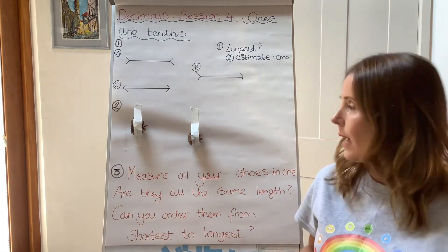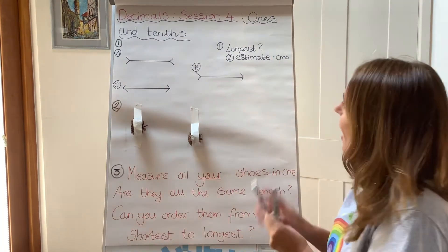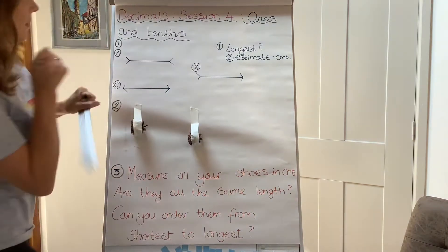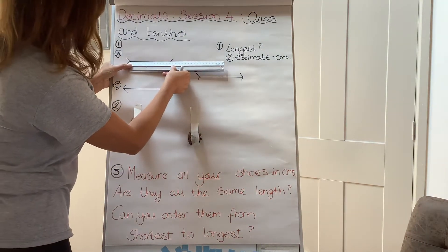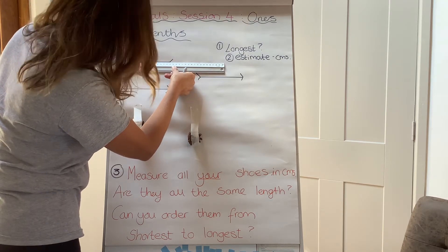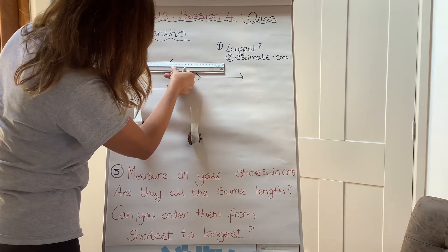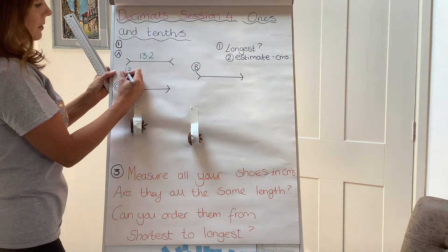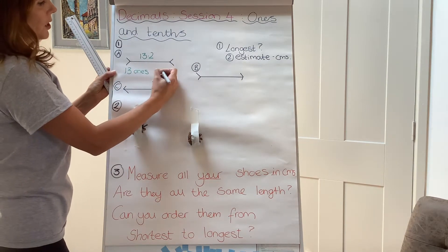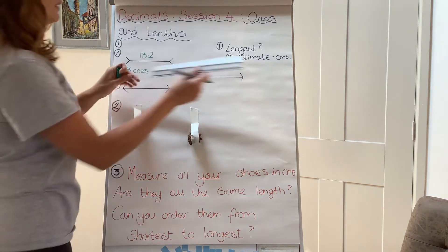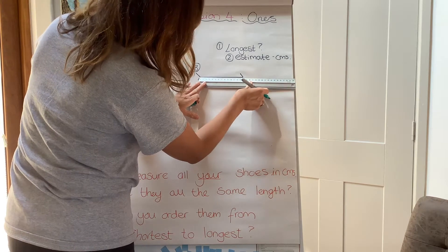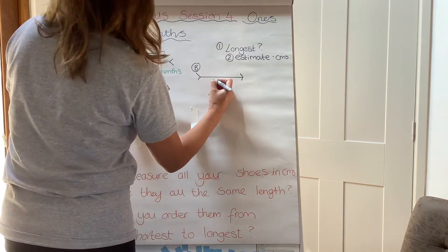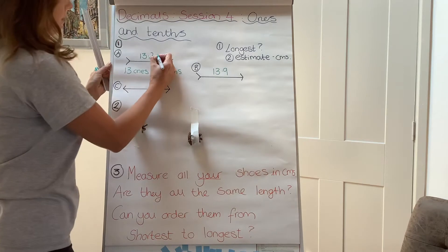So let's measure them now. What we need to do is measure accurately with a ruler. We place the ruler at zero — that goes to 13.2. So we've got 13 whole ones and 2 tenths for that one. Line B, begin at zero, make sure we go right to the end — it is 13.9 centimetres.